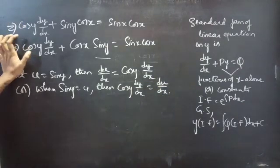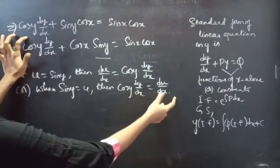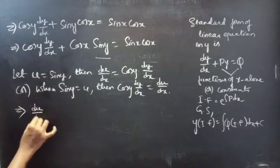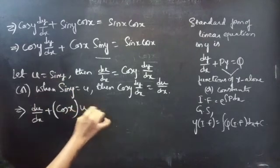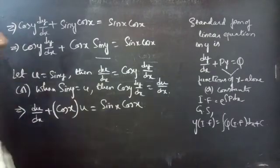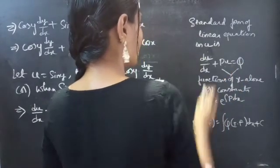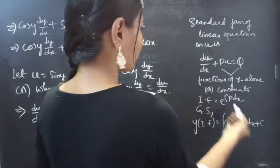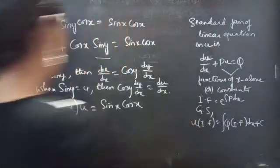Now we'll write the above equation in terms of u and x by substituting. Replace the first term by du/dx and sine y by u. The equation becomes du/dx plus cos x into u equals sine x into cos x, which is linear in u and x. The standard form of the linear equation in u and x is du/dx plus P·u equals Q, where P and Q are functions of x alone, and the integrating factor is e^(∫P dx). The general solution is u into IF equals ∫Q into IF dx plus c.